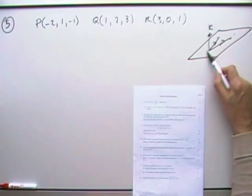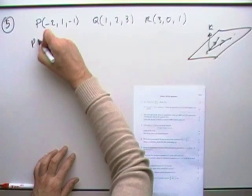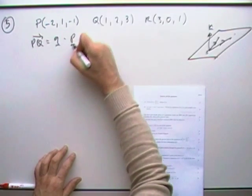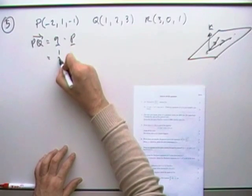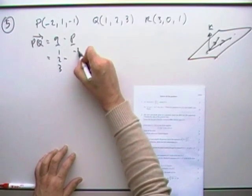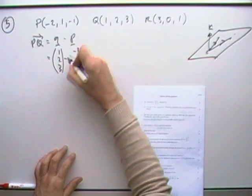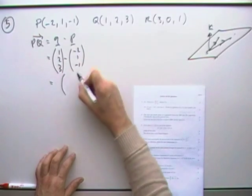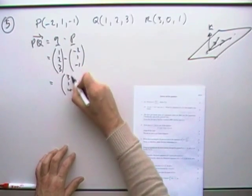Right, so the first bit's going to be get two vectors. So we'll just start with P. So I'll get PQ, which will be Q minus P, so that'll be (1, 2, 3) take away (-2, 1, -1), so that's going to be (3, 1, 4).